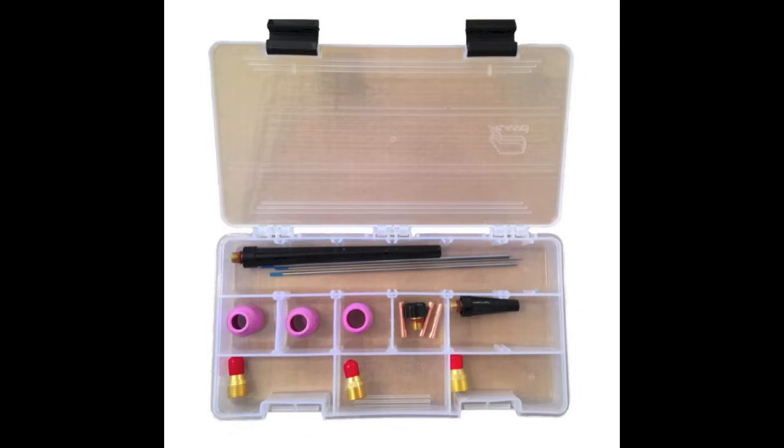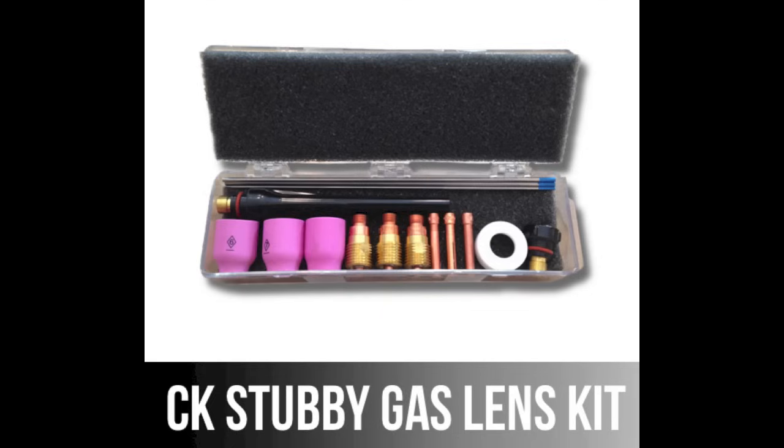I saved this little commercial for the end here in case you want to bail on me now but I have a new product on the Weldmonger store at weldmonger.com. It's a gas lens kit for number 9 and 20 style torches. Those are the small style TIG torches. I've been selling a stubby gas lens kit for large size torches like a 17, 18, and 26 for a while now. So now I've got both products. We'll see you next week.